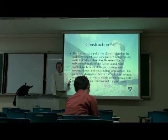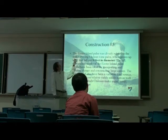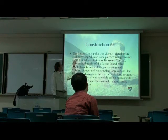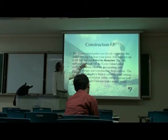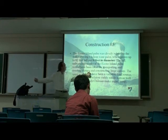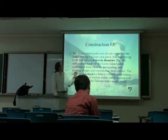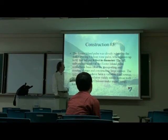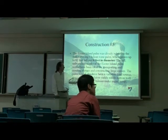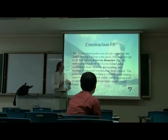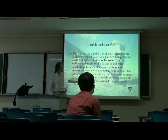Here's some data about the tree. The Easter Island palm, closely related to the still-surviving Chilean wine palm, grows up to 82 feet — about 25 meters tall — and six feet, or two meters, in diameter. Very large. The tall, unbranched trunks of the Easter Island palm would have been ideal for transporting, rolling sections, and constructing large canoes. The palm would also have been a valuable food source, since its Chilean relative yields edible nuts. Chileans still make sugar, syrup, honey, and wine using the palm tree.